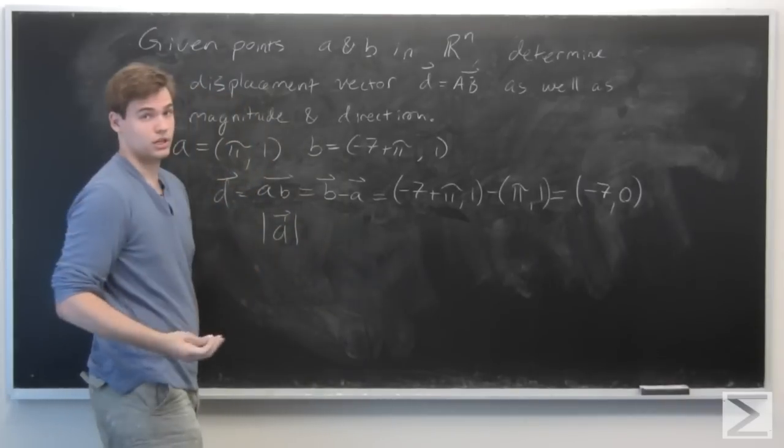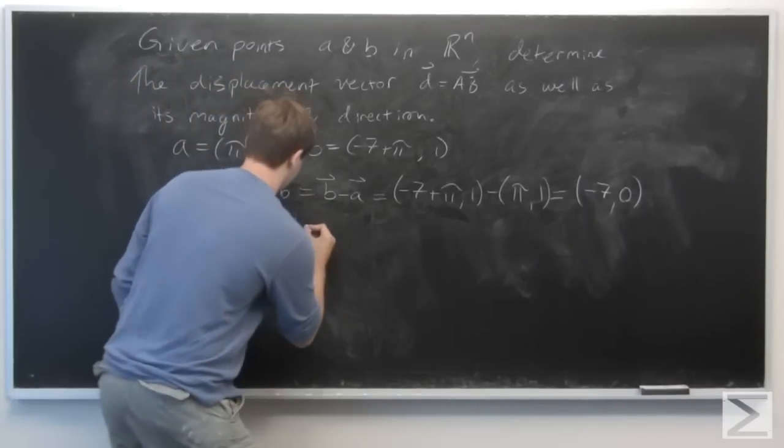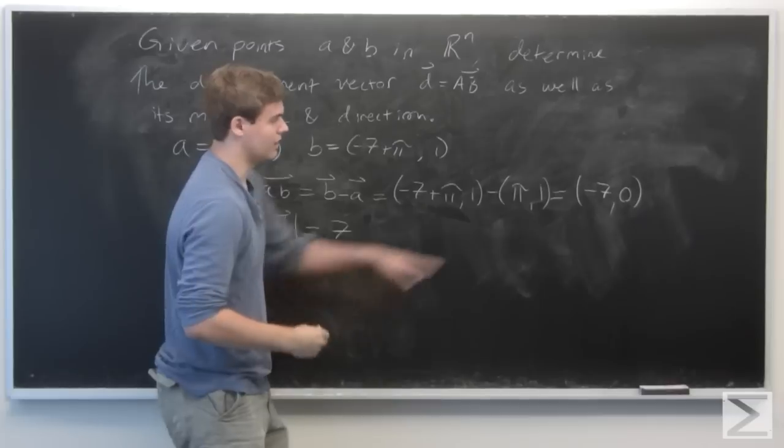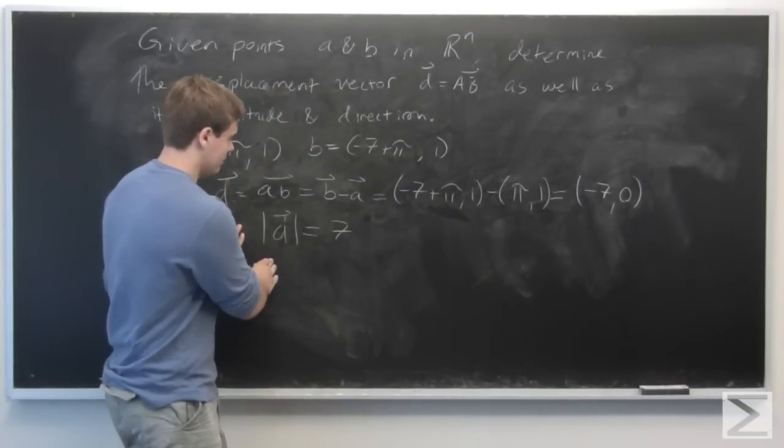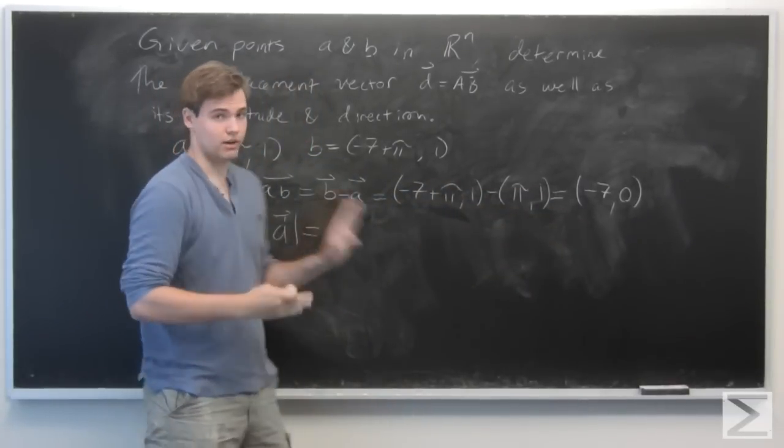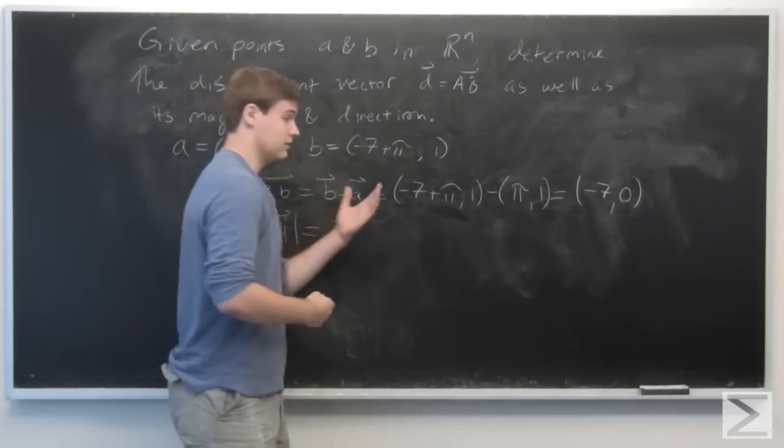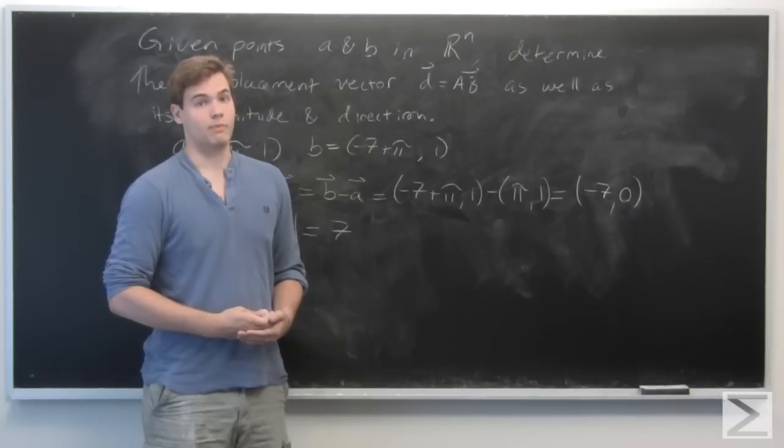So the norm of d or its magnitude is just going to be 7 or the absolute value of minus 7. And since we have that, the unit vector in the same direction as d is just going to be d itself divided by its magnitude.